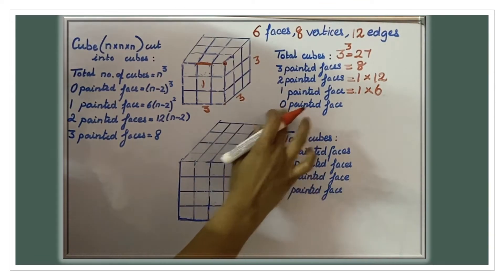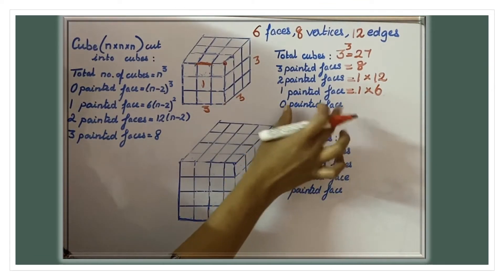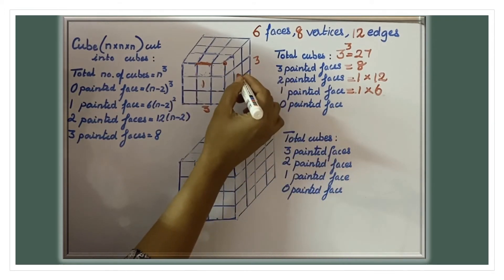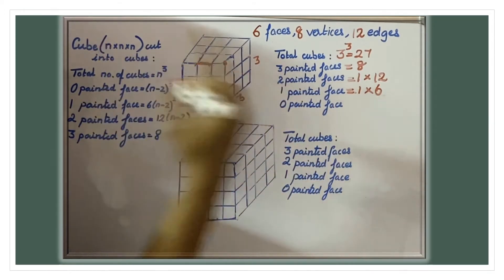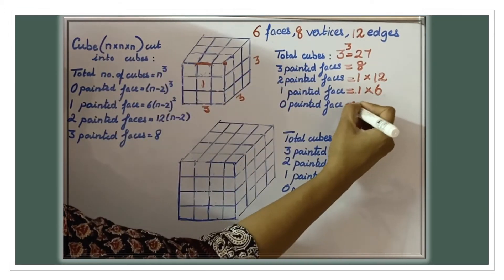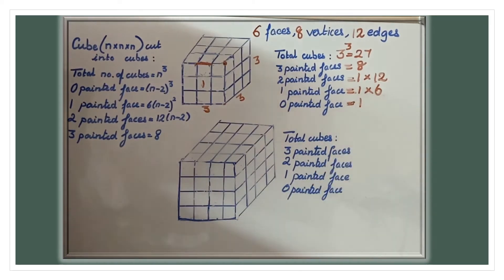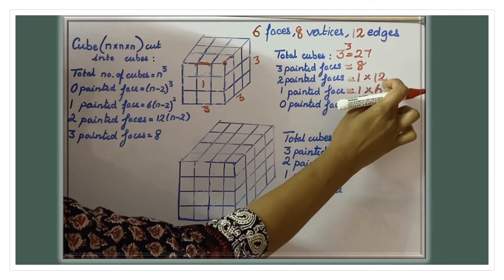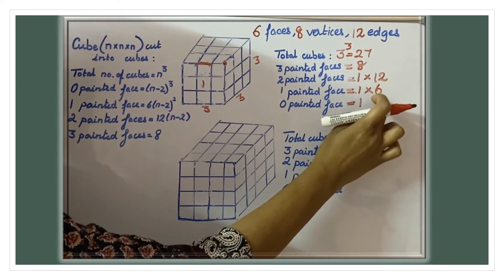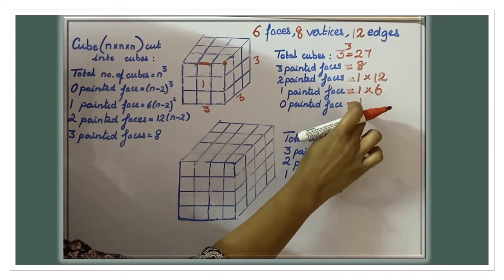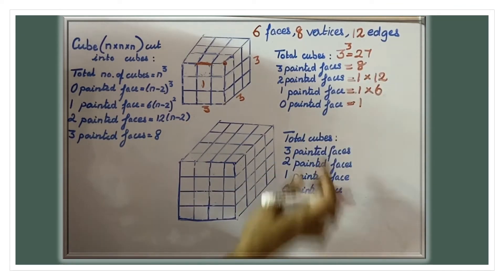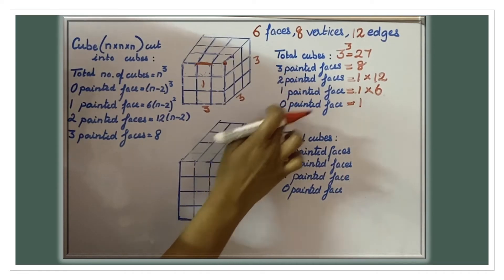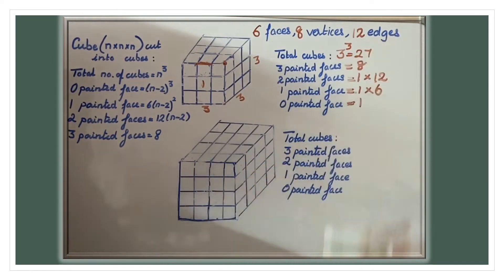How many cubes are zero face painted? Zero-face-painted cubes are in the middle layer — the middle cube is zero face painted, giving one cube. If we add eight plus twelve plus six plus one, that equals twenty-seven. Adding three-face, two-face, one-face, and zero-face painted cubes gives us the total number of cubes.